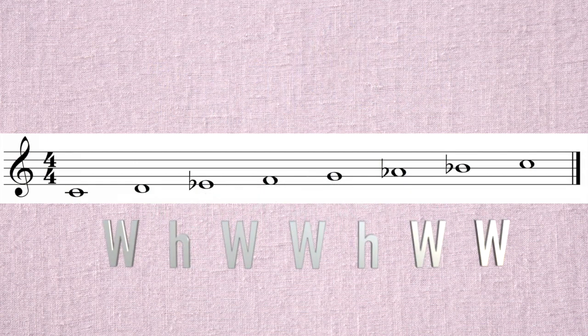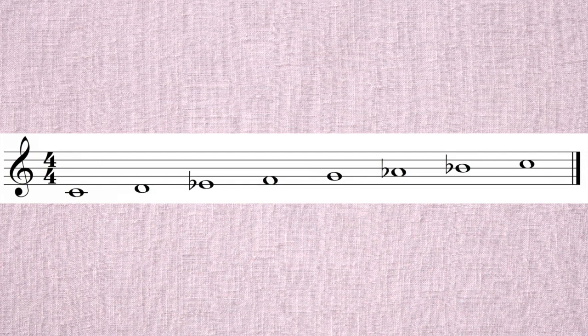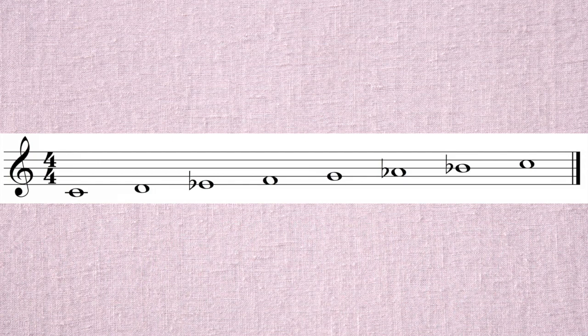We now have a new pattern of whole steps and half steps: whole, half, whole, whole, half, whole, whole. The challenge composers found with the natural minor scale is that it didn't lead to a strong sense of resolution at the end. Listen to this chord progression — the last two chords don't have a strong sense of pull.